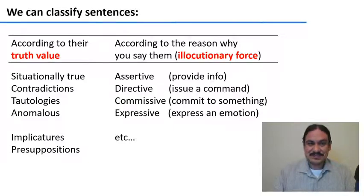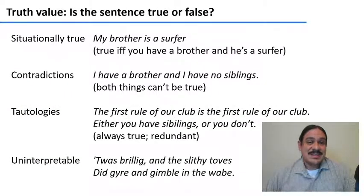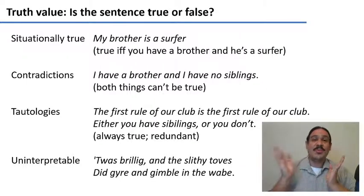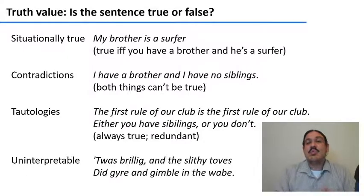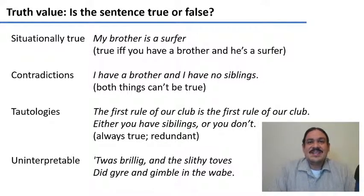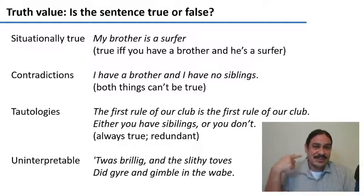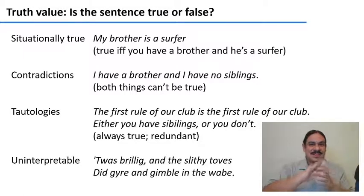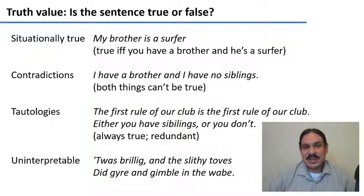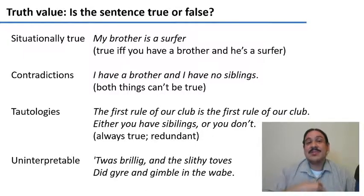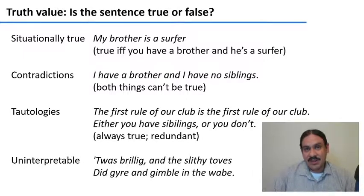Let's start with the truth value — trying to figure out if a sentence is true or not. You can have a sentence that is situationally true, that is true with the necessary context. For example, 'my brother is a surfer' would be true if and only if I have a brother and that brother is a surfer. There are also sentences that can never be true; we call these contradictions. For example, 'I have a brother and I have no siblings' — both things can't be true at the same time, so there's no context that fixes this. It always has a value of false.